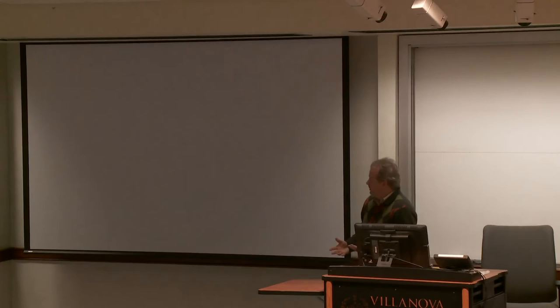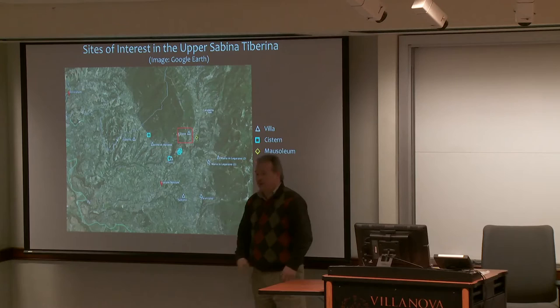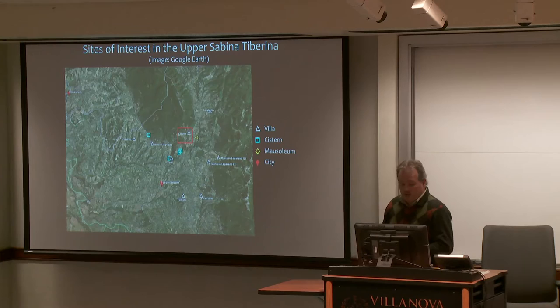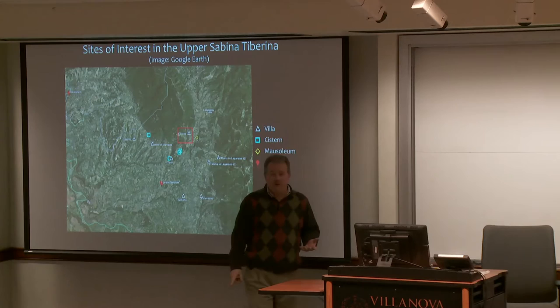A villa is basically a big farm that agriculturally exploits the territory around it — especially with planting of olive trees to produce olive oil and grapevines to produce wine. This region is still quite known today for its olive production. The landscape consists of mountains to the east with rolling hills that go down to the river valley. We've found a number of villas, including two that were previously completely unknown. From the Roman period, there was really only one Roman village in the area, right at a town called Forum Novum.